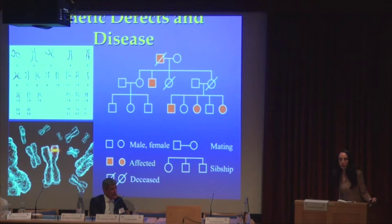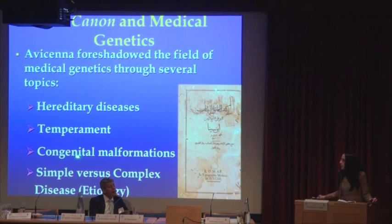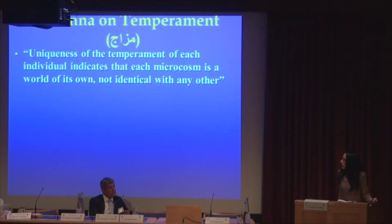Avicenna was not aware of these genetics concepts. However, he foreshadowed the field of medical genetics through several topics. Besides hereditary diseases, Avicenna described temperament, provided an explanation for congenital malformations, and he classified diseases based on etiology into two groups: simple and complex diseases. Avicenna noted the uniqueness of the temperament of each individual as indicating that each microcosm or constitution is unique and not identical with any other.